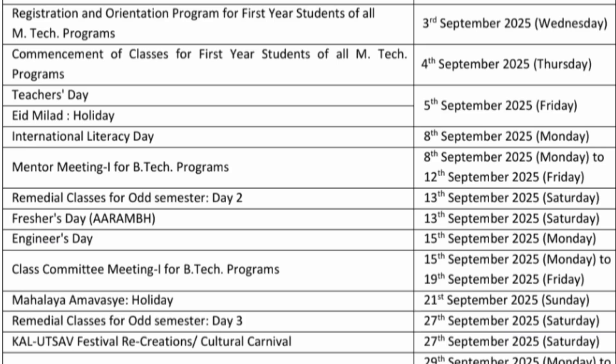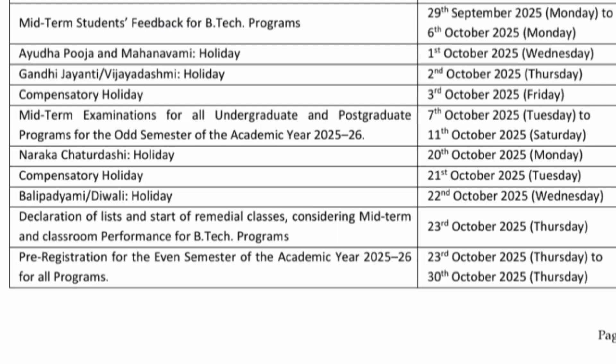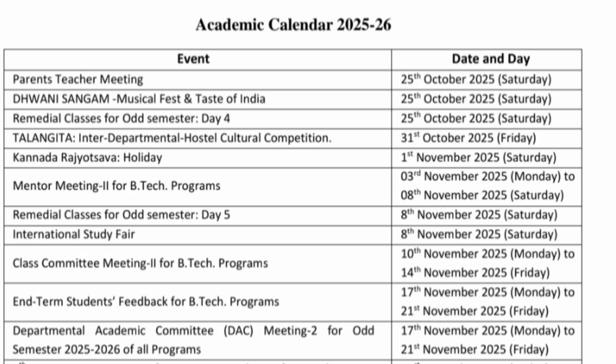There are a few days like Engineers' Day and holidays like Mahalaya Amavasya. The 3rd remedial class is on 27th September, along with some cultural festival dates from 27th September onwards. Midterm student feedback for the B.Tech program is between 29th September to 6th October. A few more holidays are mentioned: Ayudha Puja, Gandhi Jayanti, and compensatory holidays up to 2nd October. Midterm examinations for all undergraduate and postgraduate odd semester students will happen between 7th to 11th October.